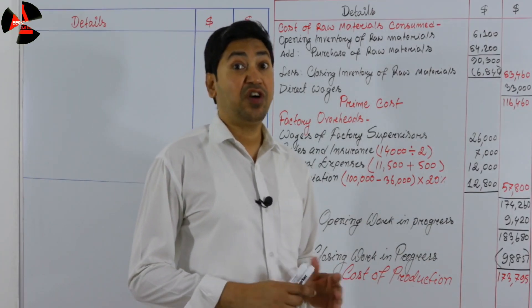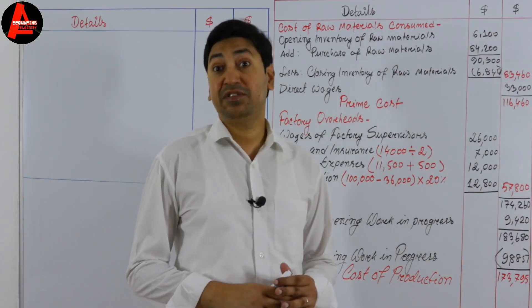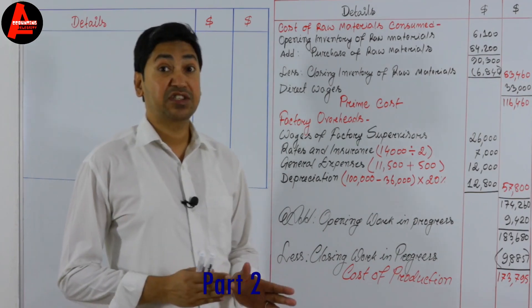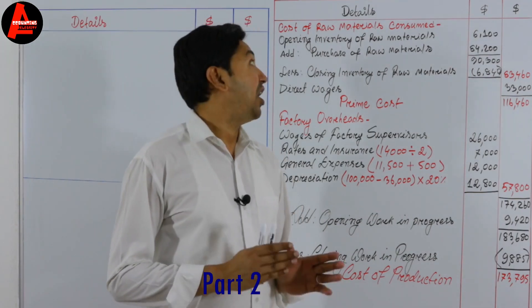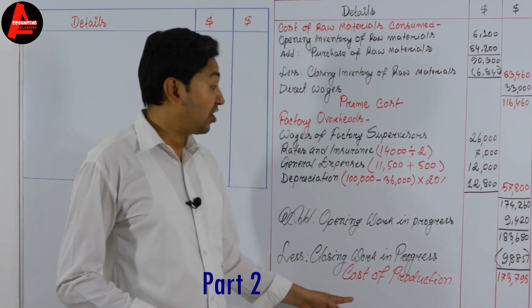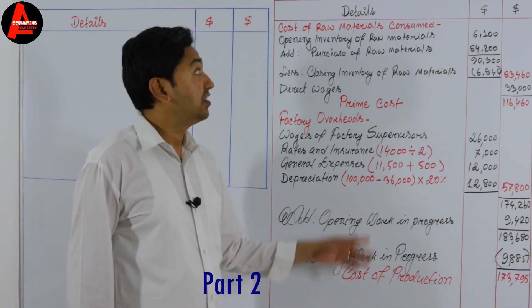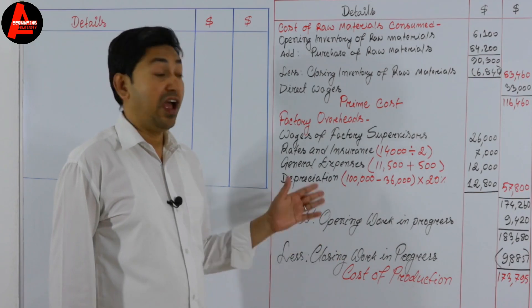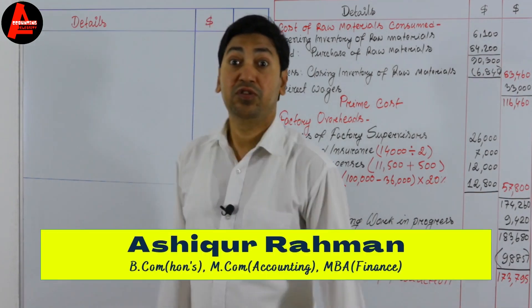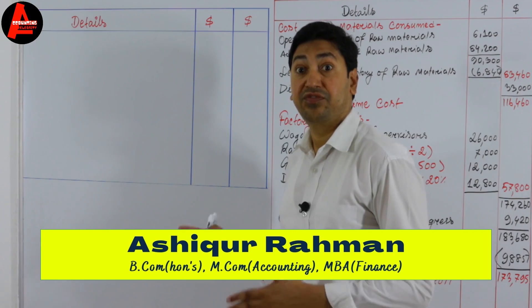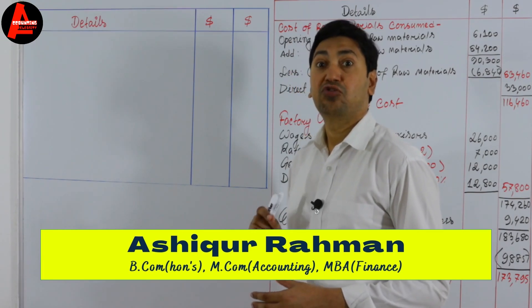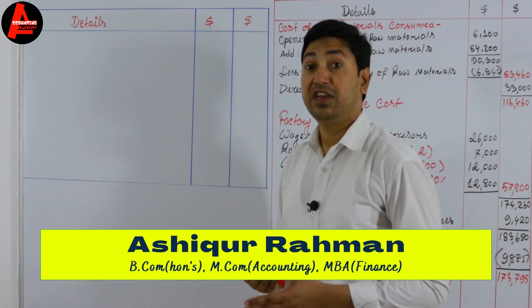Today in this tutorial I'll show you how to prepare an income statement of a manufacturing business. In the first part of this series I showed how to calculate cost of production of the manufacturing business. This is the manufacturing account, and from the balance of the manufacturing account we will now do the income statement. The first section of the income statement is the trading account.